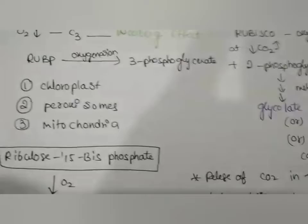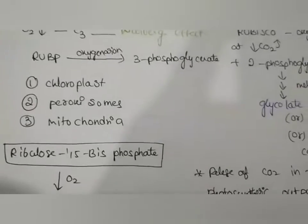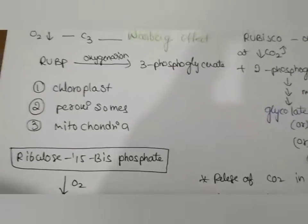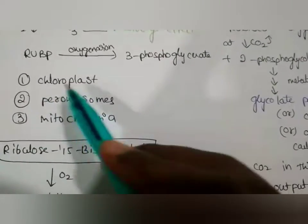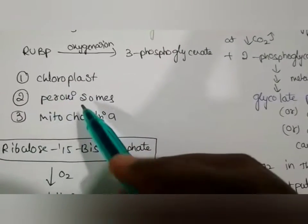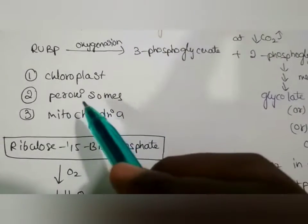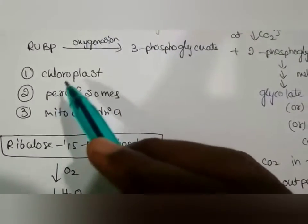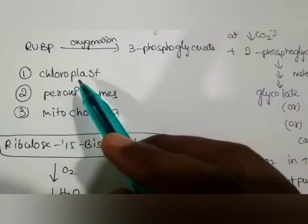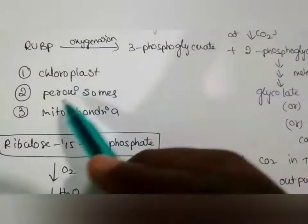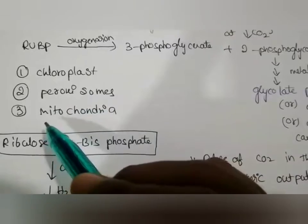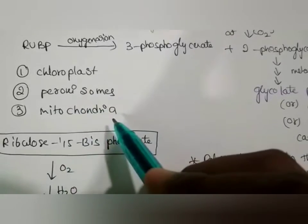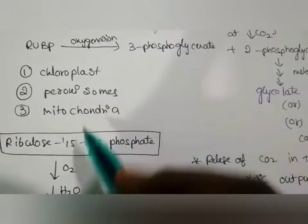Mainly three organelles are involved in the C2 cycle: the first one is the chloroplast, the second one is peroxisomes, and the third one is mitochondria.